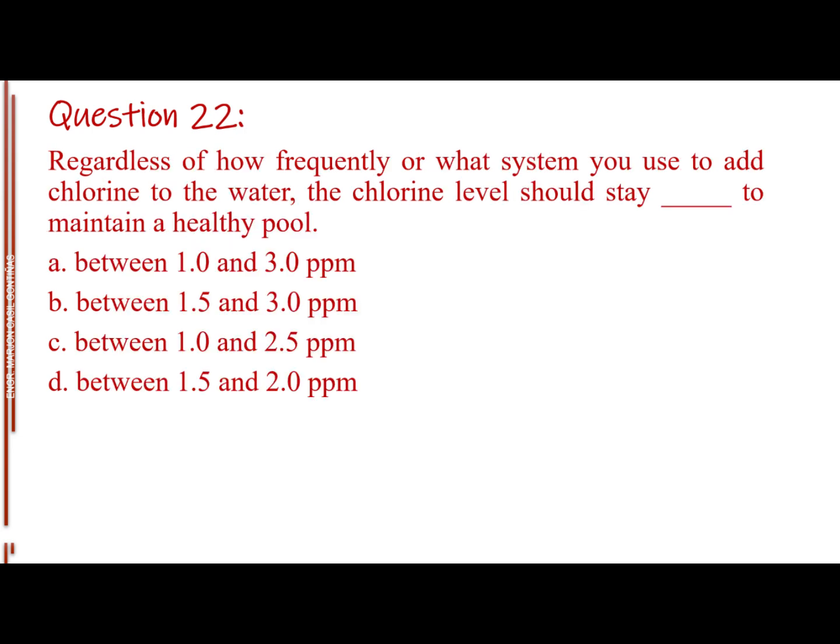Question number 22. Regardless of how frequently or what system you use to add chlorine to the water, the chlorine level should stay blank to maintain a healthy pool. Letter A, Between 1.0 and 3.0 ppm. Letter B, Between 1.5 and 3.0 ppm. Letter C, Between 1.0 and 2.5 ppm. Letter D, Between 1.5 and 2.0 ppm. The answer is Letter A, Between 1.0 and 3.0 ppm. Ppm stands for parts per million.